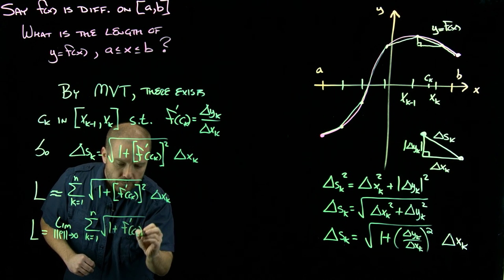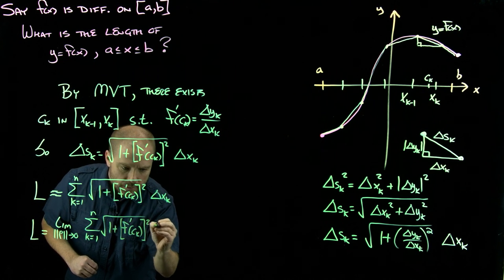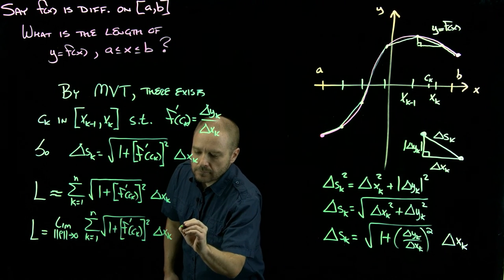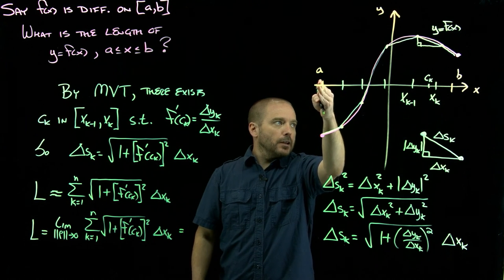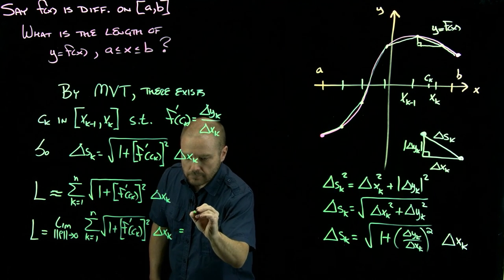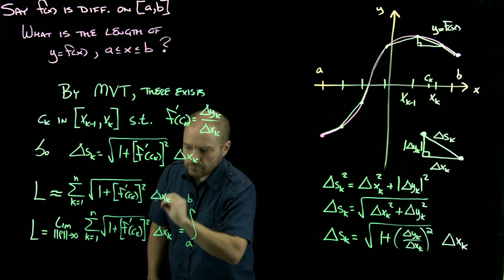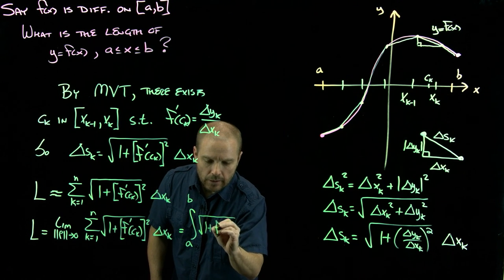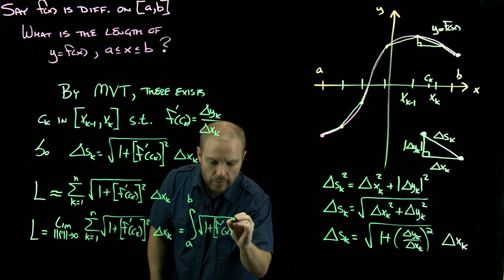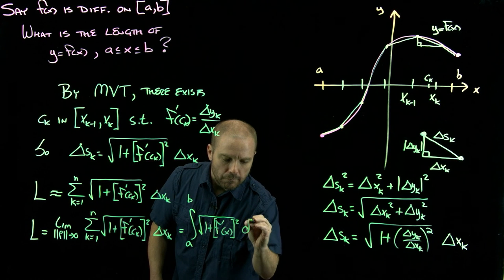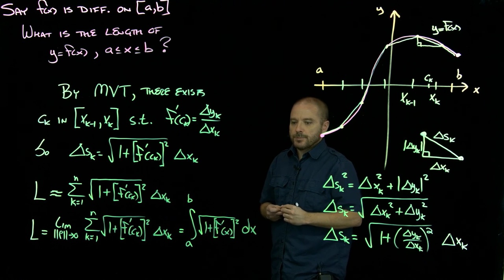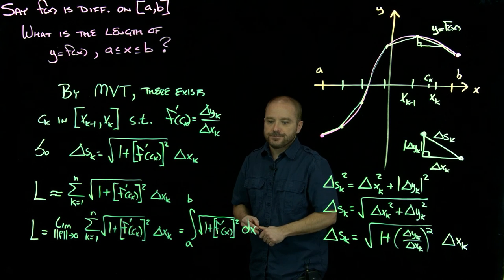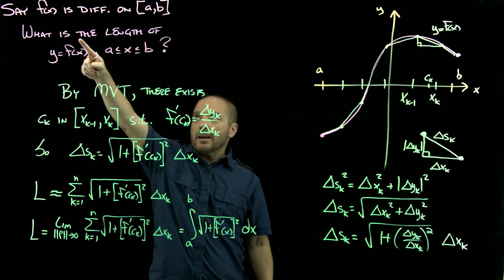But by definition, this is what we call the definite integral. So finally, that is equal to the integral from a to b of square root one plus the derivative of f squared. And now you see it's key that that function be differentiable.